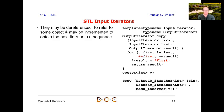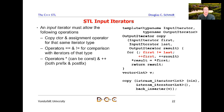You can dereference it to read its value, and you can increment it to obtain the next iterator in a sequence. Those are the only things you can really do with an input iterator. You can increment it using ++ by one, and you can dereference it using star in order to access its value.